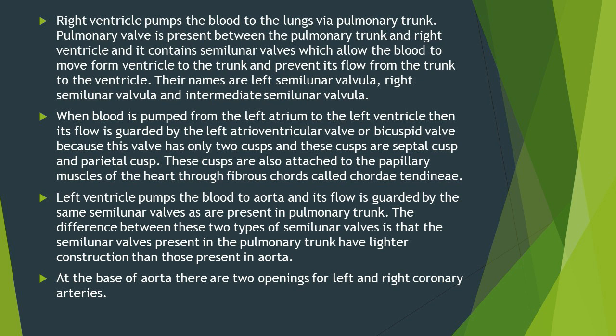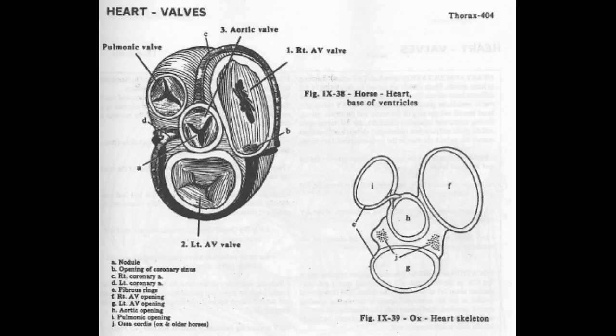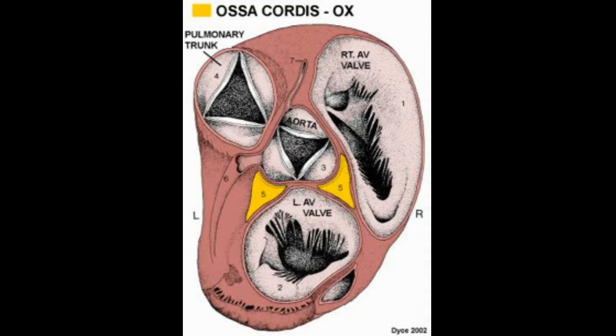At the base of the aorta there are two openings for the left coronary artery and the right coronary artery. A special feature of the bovine heart is the skeleton of the heart — a connective tissue skeleton that separates the atria from the ventricles and provides attachments for the heart valves. In bovines this skeleton is more developed than in other species and forms two bones called ossa cordis, one between the right atrium and right ventricle and another between the left atrium and left ventricle.